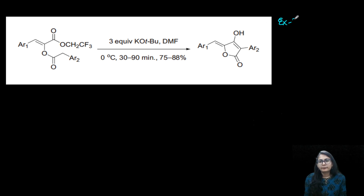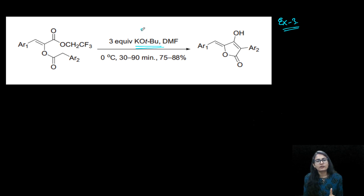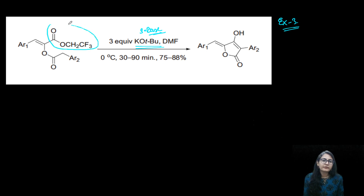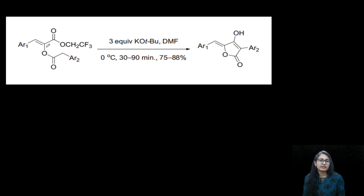Now you can try out example number three. Try to do this by yourself. So again, you have a bulky base — a very strong base. What is a strong base going to do? It's going to take away a proton. We have two ester groups here. This is one ester group and the other ester group is here. Which one is the enolizable ester? Definitely this ester is not enolizable because the alpha carbon does not have a proton to lose. The other ester over here is the enolizable ester — this is what you have to identify.